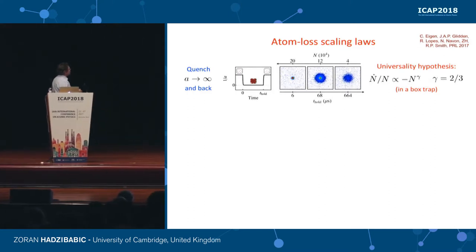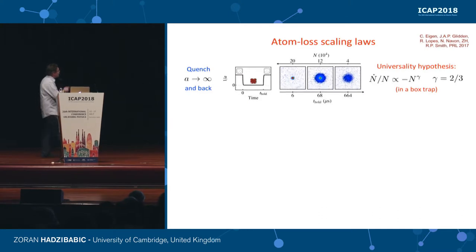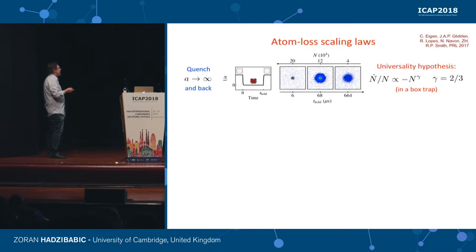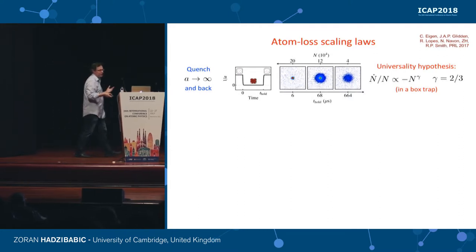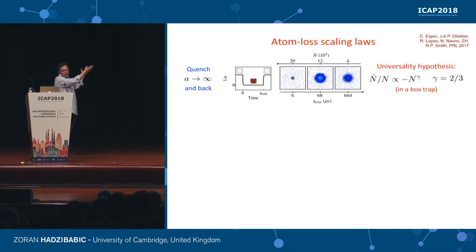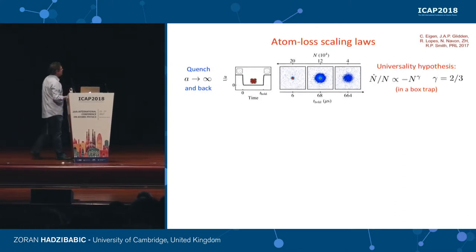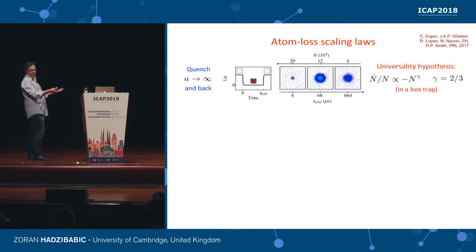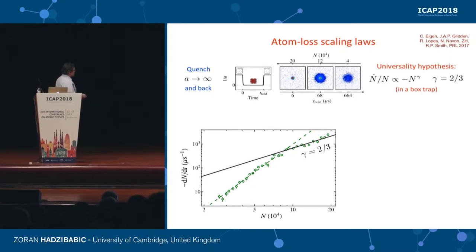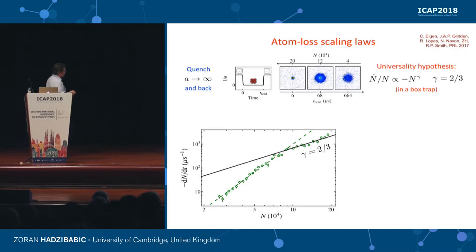What you see as a function of time is that the particle number decays and the gas heats — shown here as time-of-flight pictures. The first result we wanted to confirm is the so-called universality hypothesis as seen in the loss dynamics. For a box-trapped gas, the prediction is very simple: N-dot over N equals minus N to the two-thirds. We just count the atoms as a function of time, take statistics so we can differentiate our curves, and plot N-dot versus N on a log-log plot. What you see is actually two regimes. At large particle number — short times after the quench — we nicely see this fermionic gamma equals two-thirds.